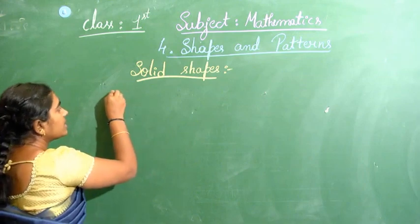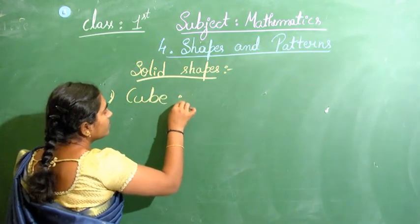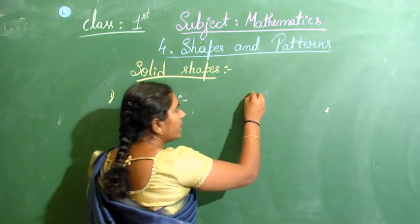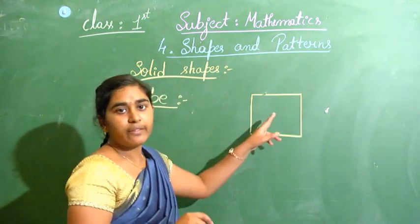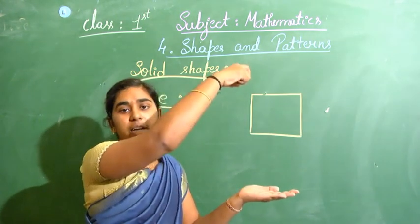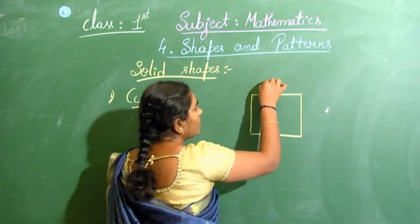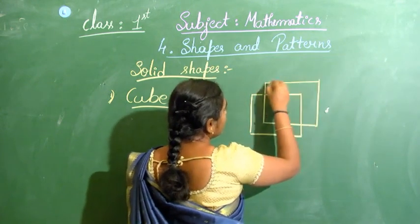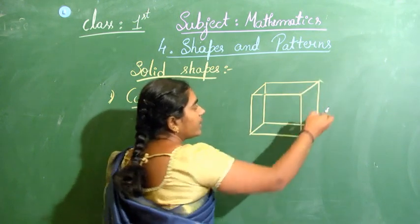The first solid shape we will learn is a cube. How does a cube come? We know that the first plane figure is a square. If I take a square and stretch it over some height, then draw one more square and join the corners, we will get a cube.